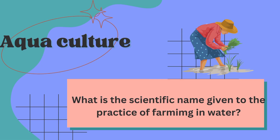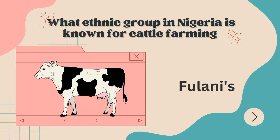The second one says: what is the scientific name given to the practice of farming in water? It is called aquaculture. Aquaculture is the farming done in water. That's aquaculture.